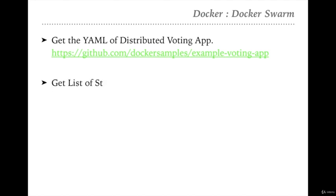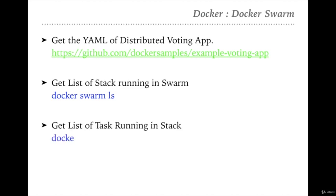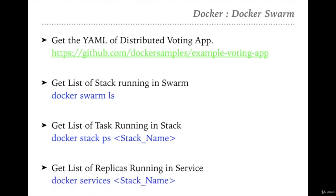Once we deploy the stack, if we need to find out how many stacks are running, we can execute the command `docker stack ls`. If you want to know how many tasks are running in a single stack, execute `docker stack ps` followed by your stack name. If you want to know how many services and replicas of a particular service are running, execute `docker services` followed by your stack name. Let's go to the terminal and see all these things practically.